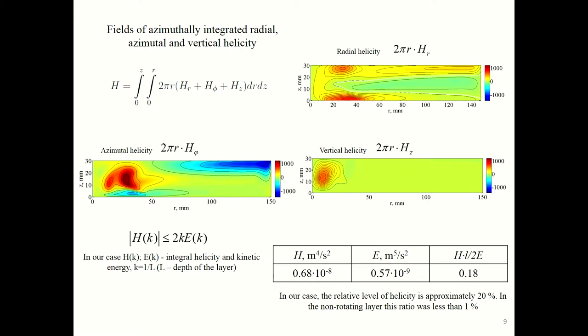As the next step, we want to estimate the level of helicity. In the area of turbulence, it's common to use this non-dimensional ratio—these ones—in spectral density of helicity and kinetic energy. This ratio is used to define the influence of helicity on spectral properties of turbulence. But in our case, we just multiply the integral helicity by the characteristic size of our flow—it's the depth of the layer—in order to have the same dimension as the integral kinetic energy. This is the value in the table. In our case, the relative level of helicity is approximately 20%, in comparison with non-dimensional rotating layer where this ratio was less than 1%.